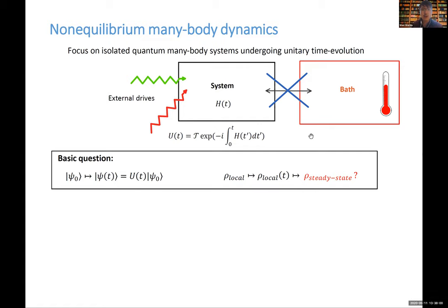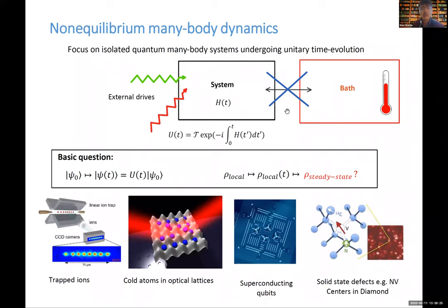We want to consider a thermodynamically large system, look at a local sub-region, and ask what the steady state is at late times. This is motivated by recent developments in atomic, molecular, and optical systems — trapped ions, cold atoms, optical lattices, superconducting qubits, solid-state defects — which serve as paradigmatic examples of systems well isolated from a bath undergoing unitary time evolution. Experimentalists have been scaling these up to the many-body regime.